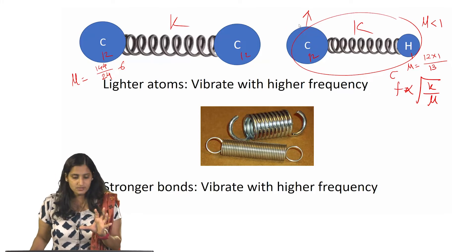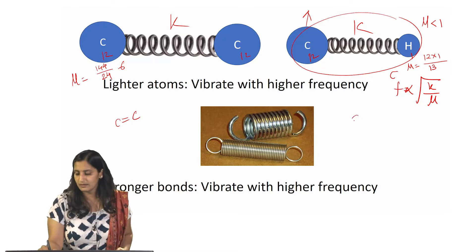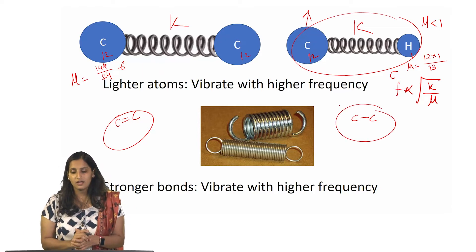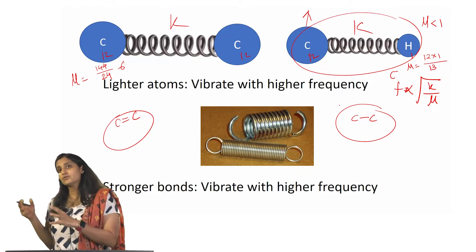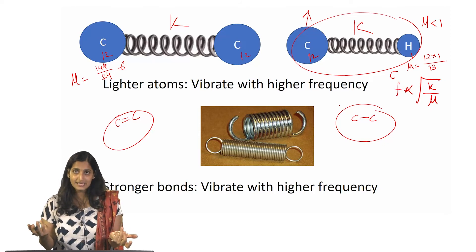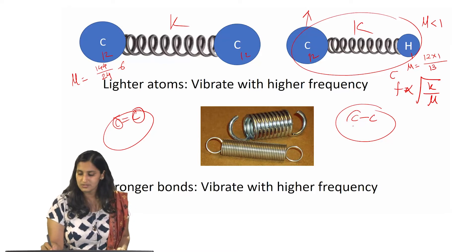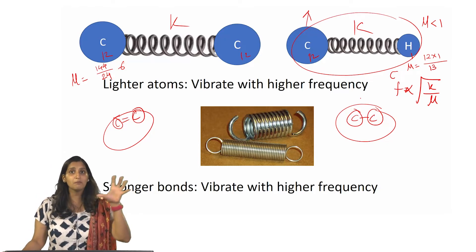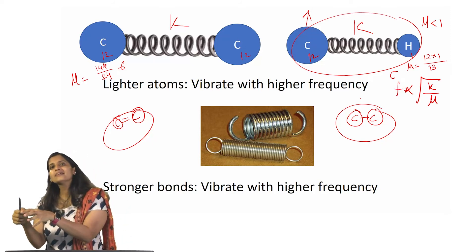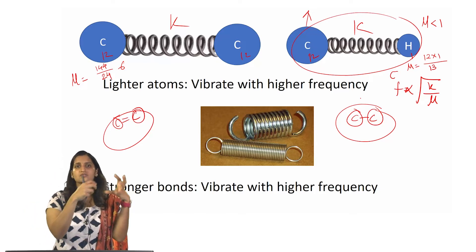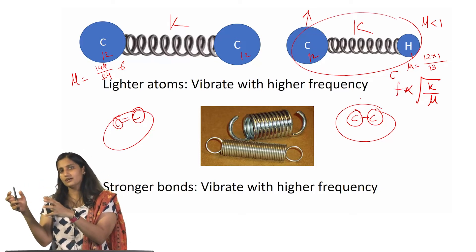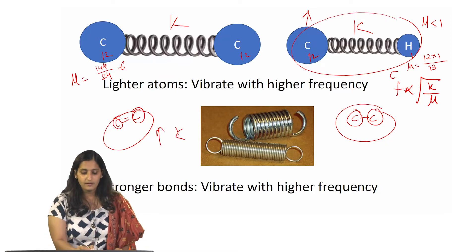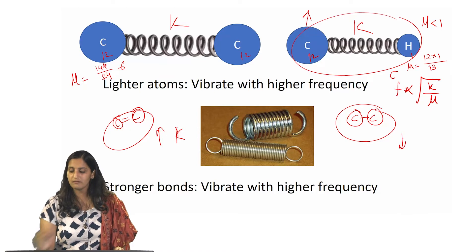Now think about two different bonds: a carbon-carbon double bond versus a carbon-carbon single bond. Which one will vibrate with a higher frequency? Going back to f ∝ √(k/μ) — in this case the μ is the same because both bonds have carbon and carbon. But k has changed: a double bond is a much tighter, stronger bonding compared to a single bond which is looser. The stronger bond is going to vibrate with a higher frequency because it has a higher k, whereas the carbon-carbon single bond will vibrate with a lower frequency.